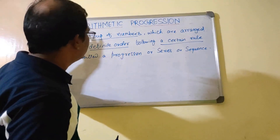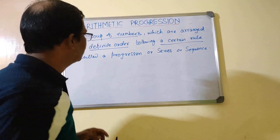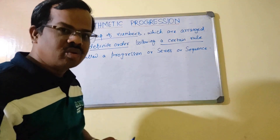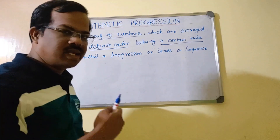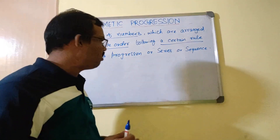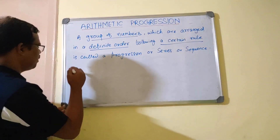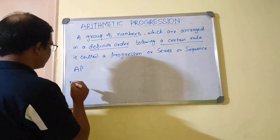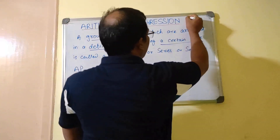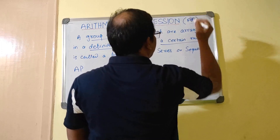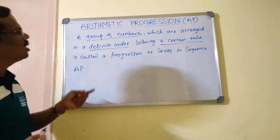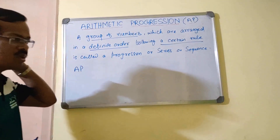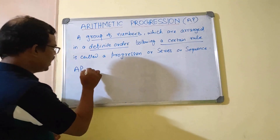I am not erasing the main definition of progression because you should remember it. Now I am going to tell you about what is arithmetic progression — that's the next level, going a little bit deeper. What is arithmetic progression, also written as AP? Write it down so that every time I refer to AP, you know this is arithmetic progression.